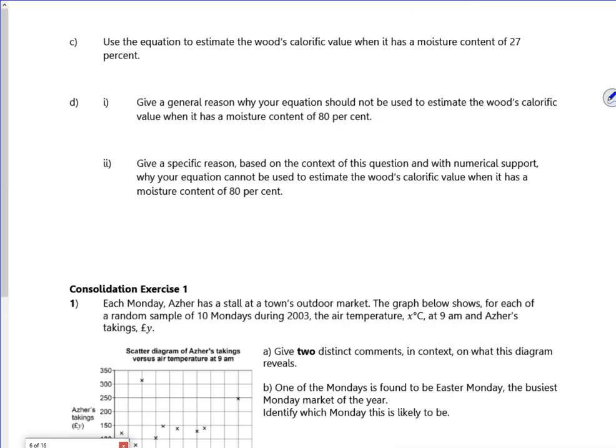Use the equation to estimate the wood's calorific value of 27%, so I can just put x as 27. So that's x is 27. So x is 27, y is minus 0.758 times 27, plus 5.35, so that's going to give me 3.30 megawatt hour per tonne.